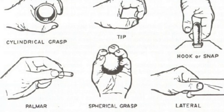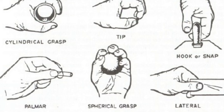When looking at the relationship between prehension components from a motor control perspective, prehension involves the arm transporting the hand to an object as the hand forms the grip characteristics that are needed to grasp the object.